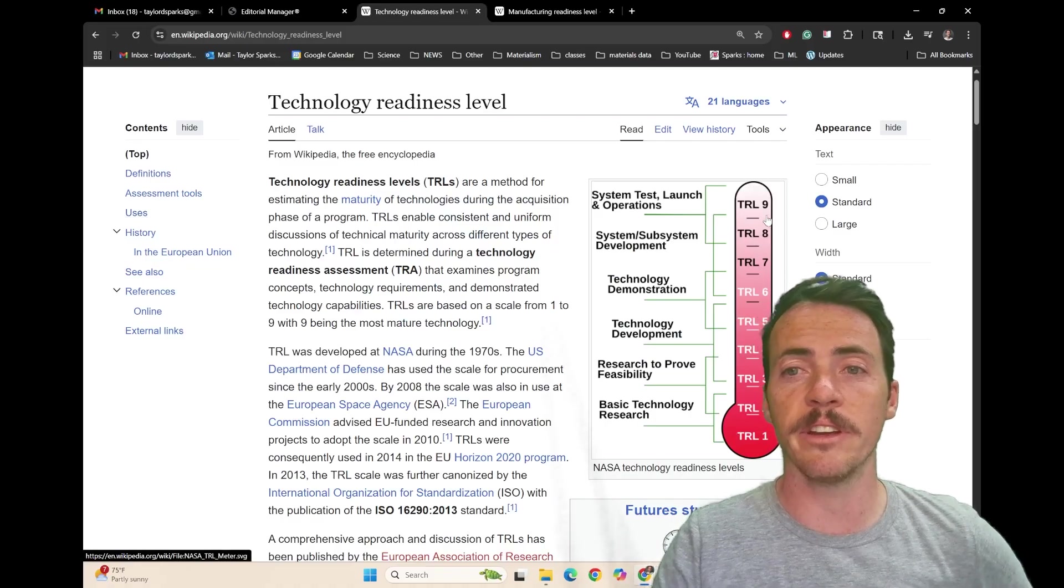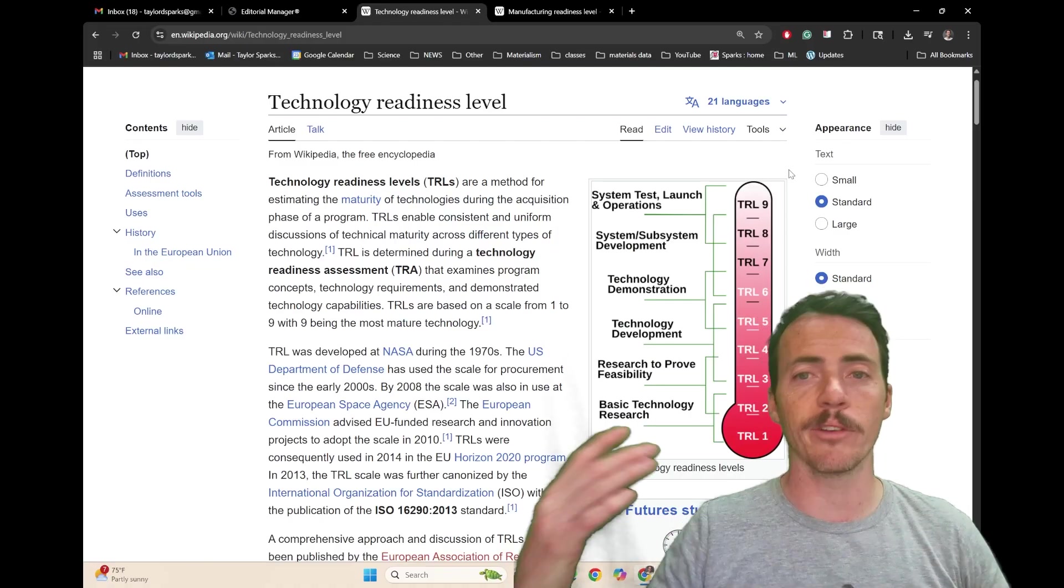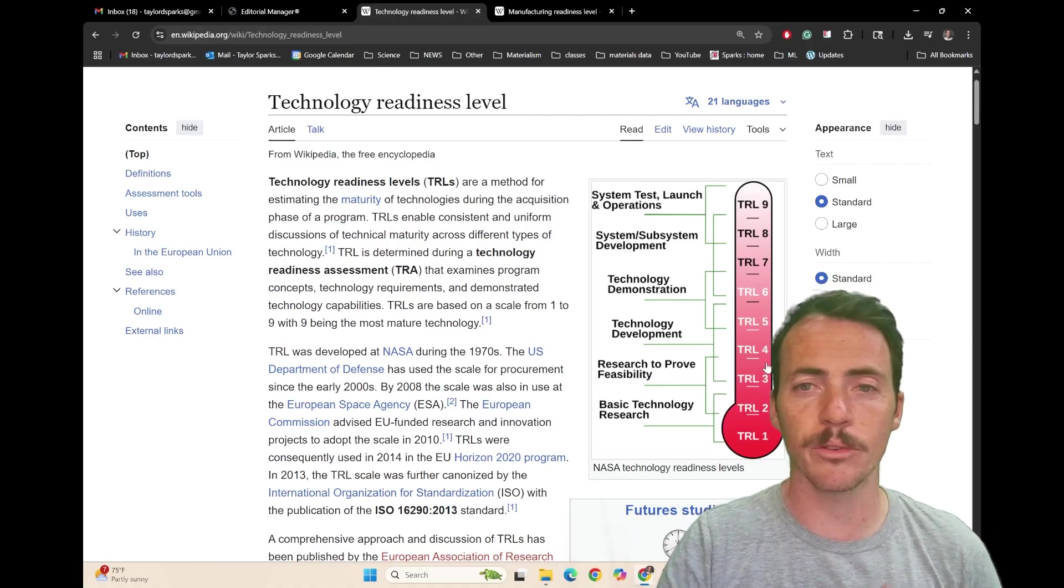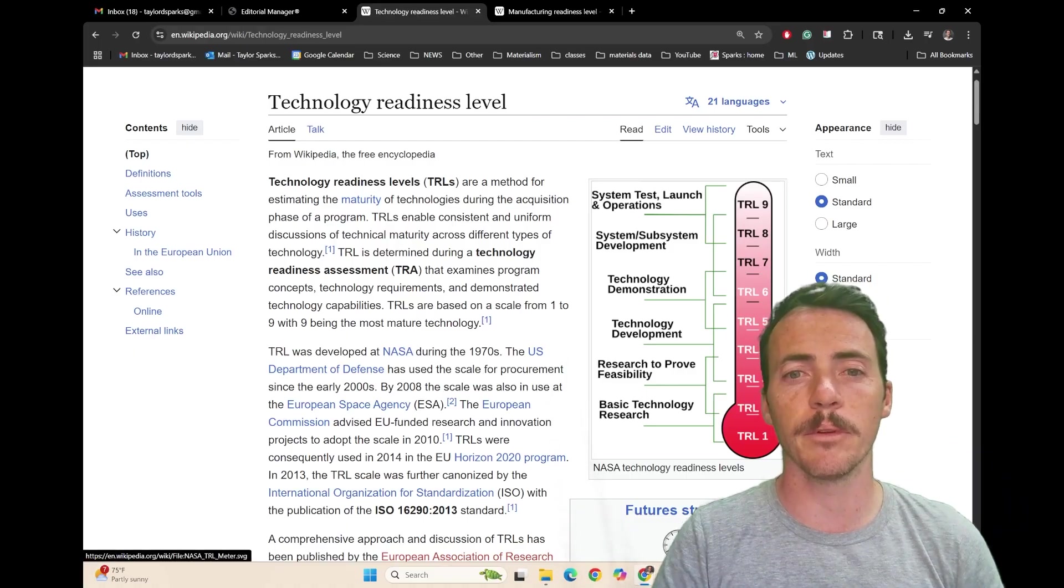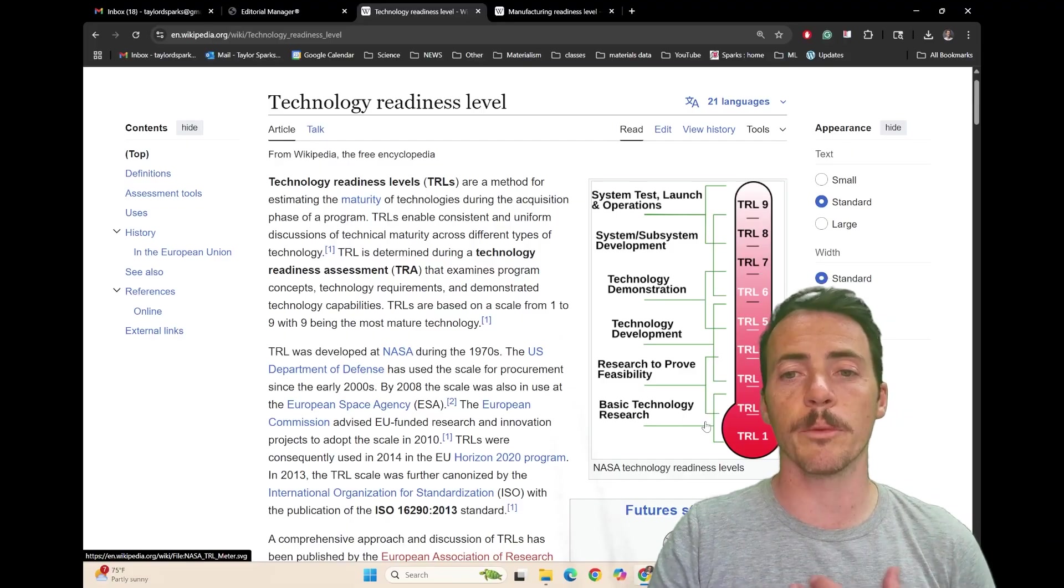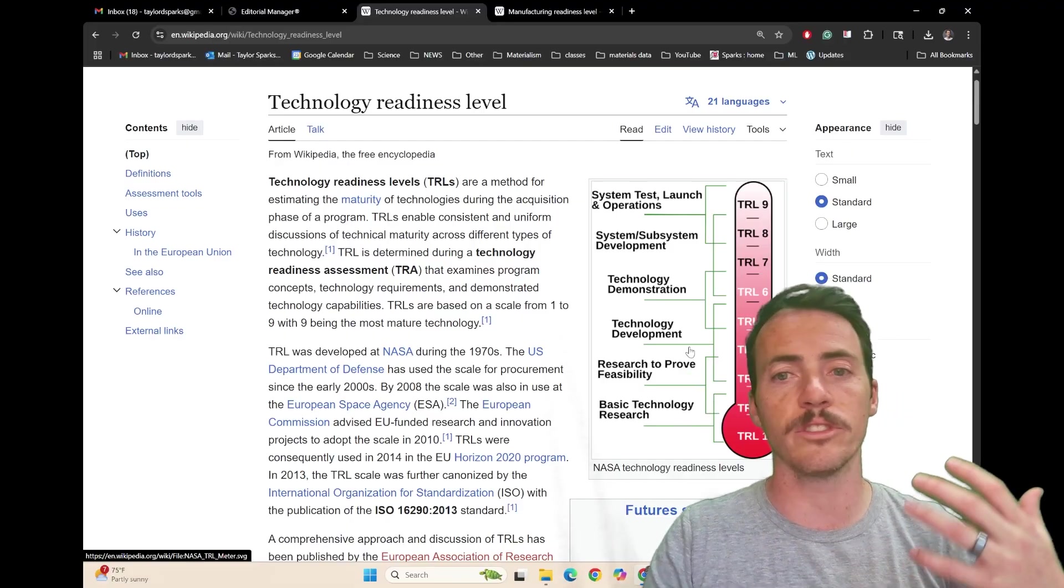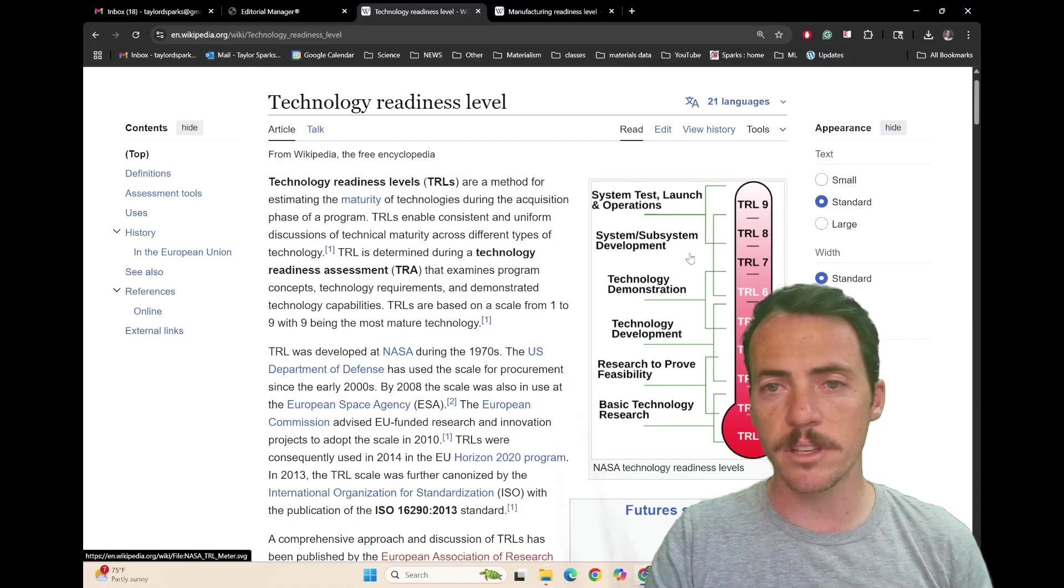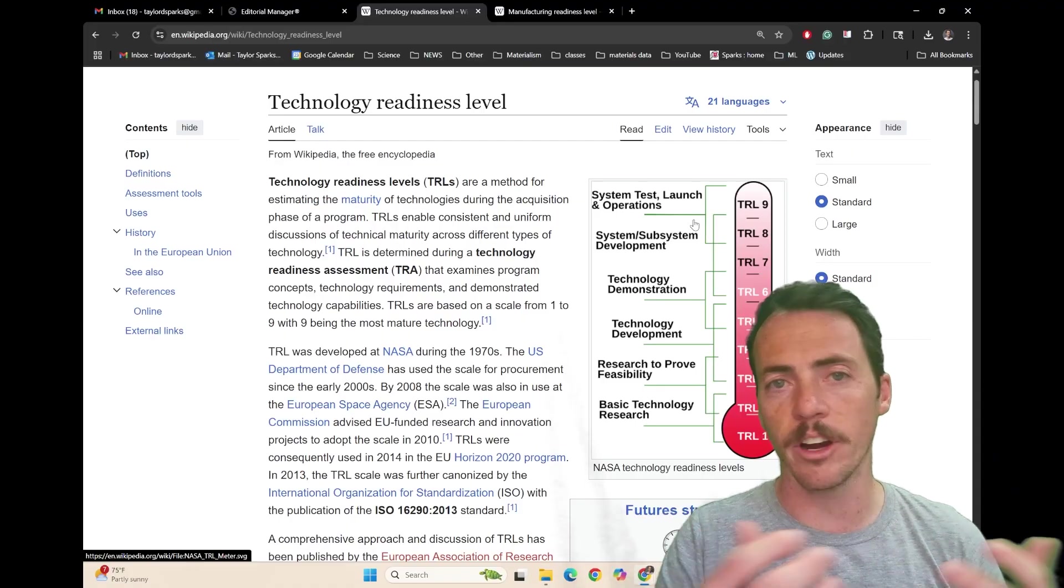From going from TRL 1 up to TRL 9. When academics write grants, sometimes they only want it to be in a certain range when they're willing to fund it, for example. This came from NASA in the 70s. It basically highlights the progress from an initial innovation trigger all the way to technology demonstration, integration with the system, integration in actual operating environment.